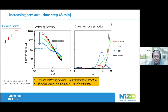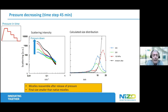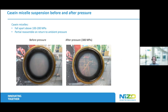When you release the pressure again, the scattering comes up again, but what you end up with is a mess — the system is not able to find back the nice native casein micelle structure that was made by the cow. You can clearly see that the transparency has gone up a lot because of the high pressure treatment. This corresponds well with the fact that you have much less scattering and much smaller scattering entities.